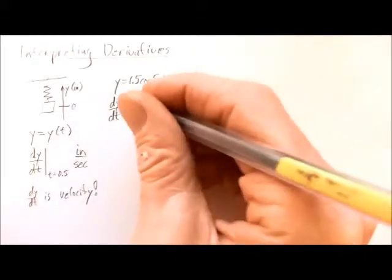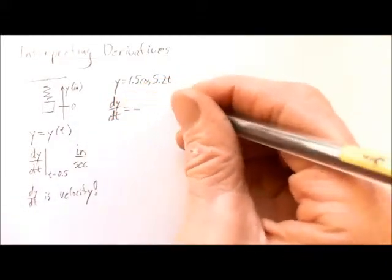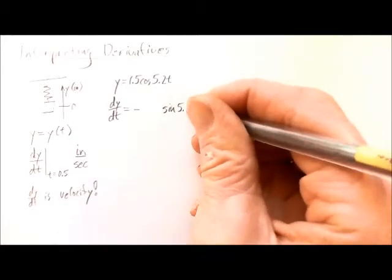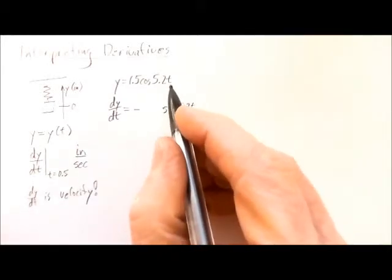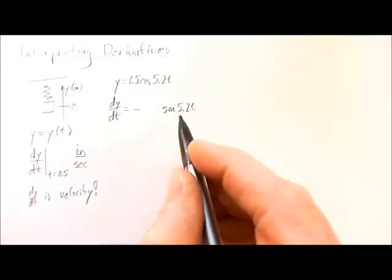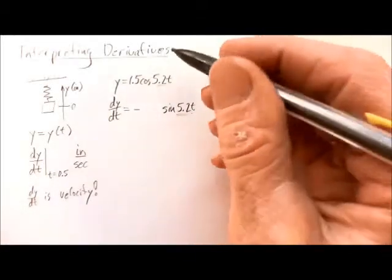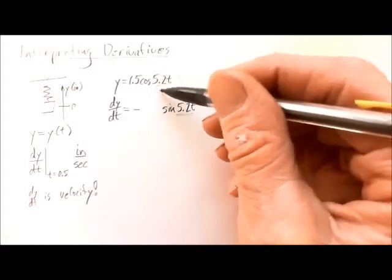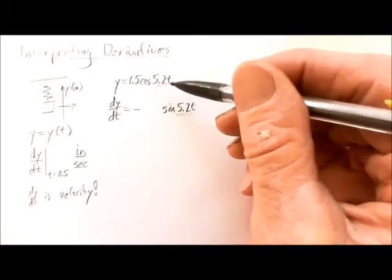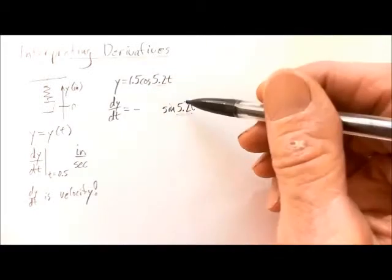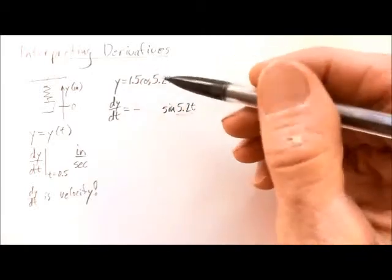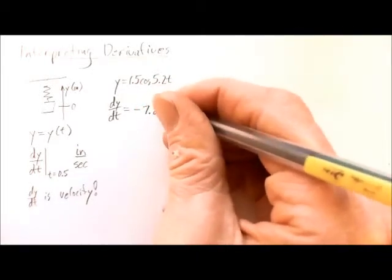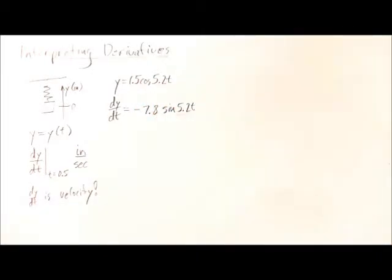The derivative of cosine is negative sine, so we're going to have a negative, and there will be a sine of 5.2t. This part here is called the argument of the trig function, and it doesn't change. But then we have to use the chain rule, so we take the derivative of 5.2t, which is 5.2, and multiply that on. So that 5.2 ends up getting multiplied by the 1.5, which comes out to be 7.8. So dy/dt equals negative 7.8 sine of 5.2t.